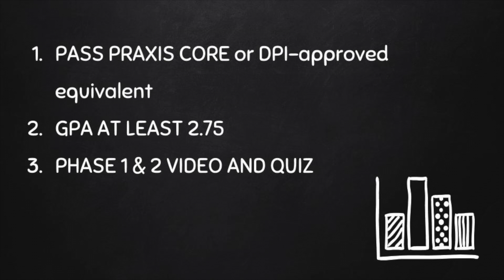A combined cumulative grade point average of at least 2.75 on a minimum of 12 completed credits, and completion of the online Phase 1 and 2 meeting video and passing the accompanying quiz on D2L.